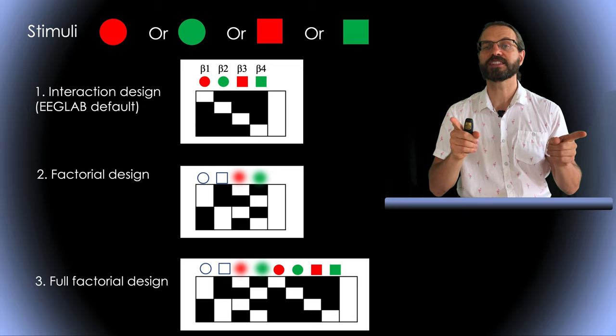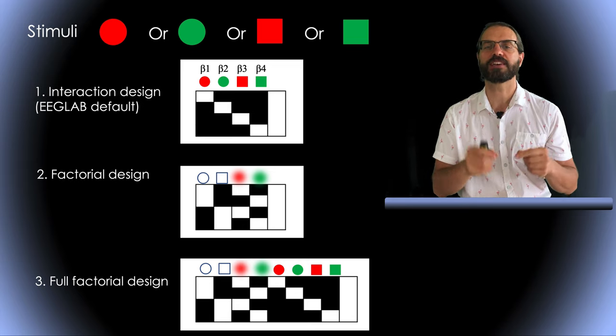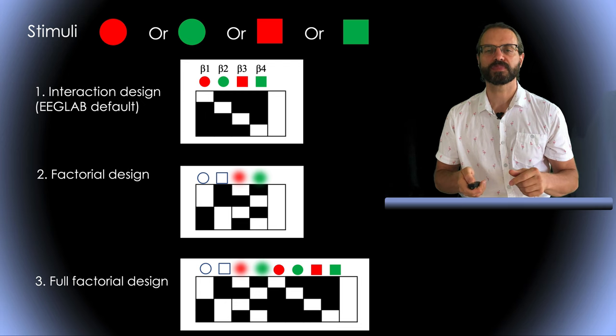The full factorial design can be used when you want to study interaction at the single subject level. However, otherwise, interactions are usually modeled at the second level, and we will see that in a second.